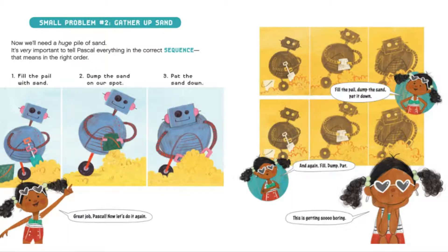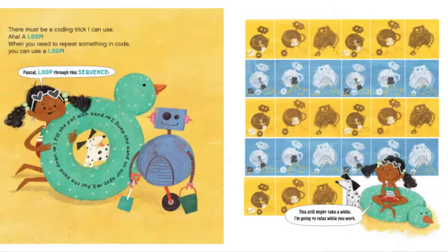Now let's do it again. Fill the pail, dump the sand, pat it down. Again and again — fill, dump, pat. This is getting so boring. There must be a coding trick I can use. A loop! When you need to repeat something in code, you can use a loop.